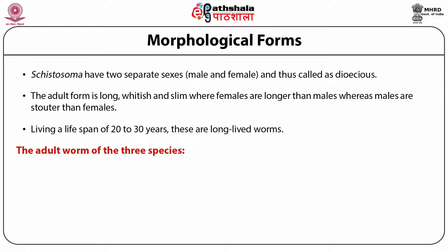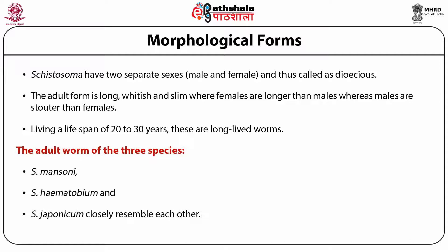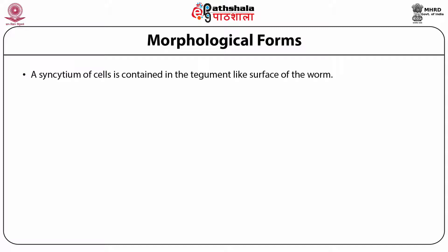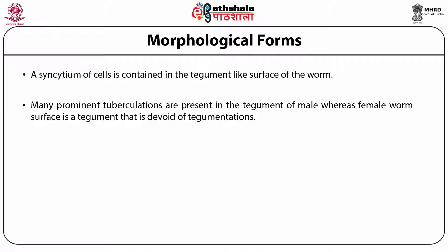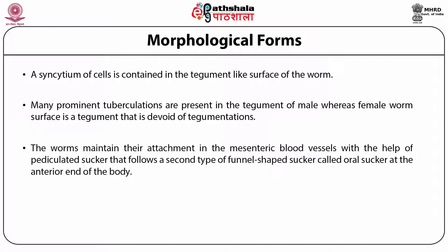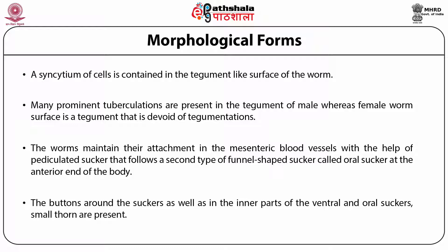Living a lifespan of 20 to 30 years, these are long-lived worms. The adult worms of three species — Cystosoma mansoni, Cystosoma haematobium, Cystosoma japonicum — closely resemble each other. Males are flat and the lateral margins of the body are folded ventrally. A tegument of cells is contained in the integument-like surface of the worm. Mainly prominent tuberculations are present in the tegument of male, whereas the female worm surface is a tegument devoid of tuberculations. The worms maintain their attachment in the mesenteric blood vessels with the help of a pedunculated sucker, followed by a funnel-shaped oral sucker at the anterior end. Around the circi, small thorns are present.